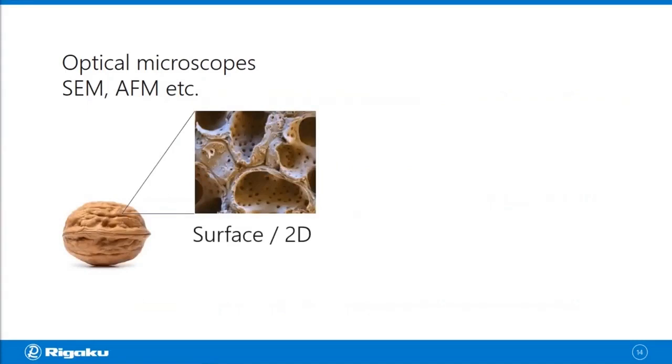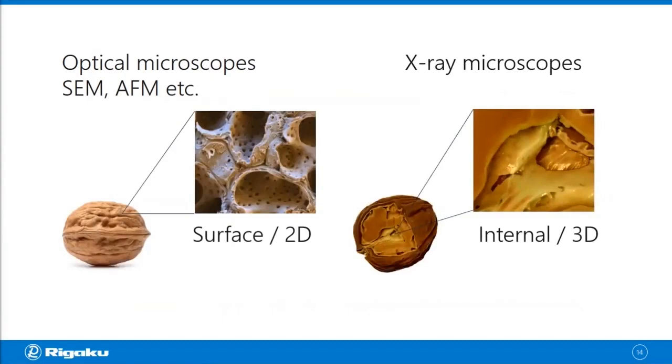If you use X-ray microscopes, since X-rays can penetrate into an object for microns or millimeters, if you look at a walnut, you're going to see inside of the walnut, and you get a whole three-dimensional image out of this object.